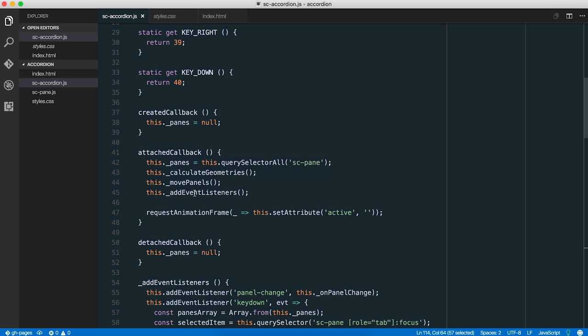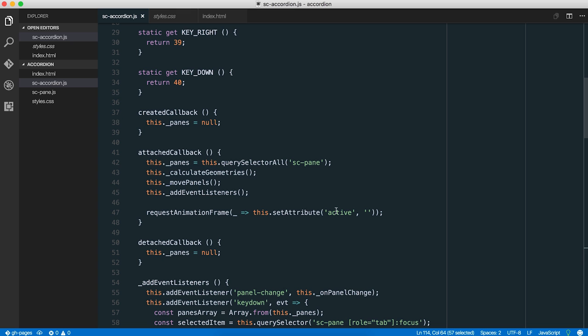So we've done that in the calculate geometries, move panels. Then we set up some event listeners for handling clicks and handling other things. And then we basically set this attribute, which is active. And that means that the accordion is now ready for business, and we can get going.